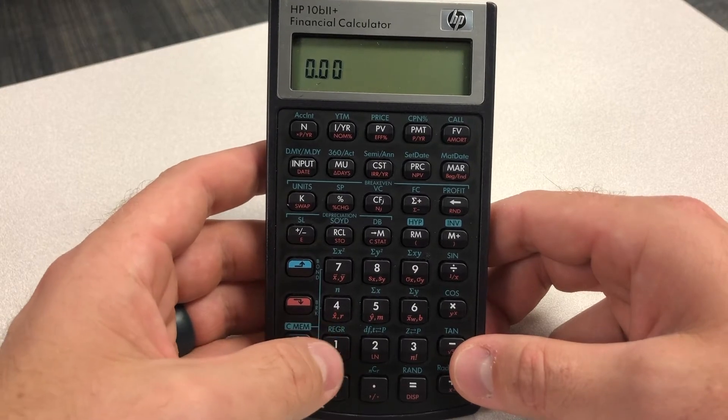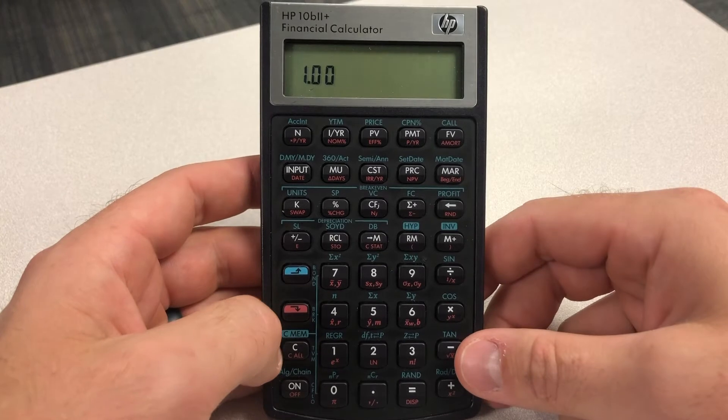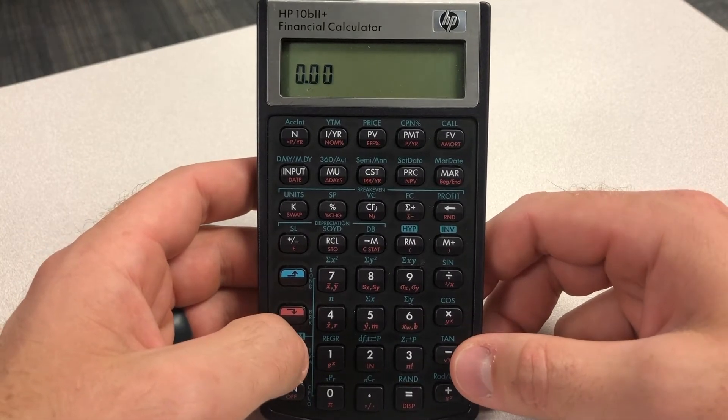Let's go back to one period per year. So one, shift, period per year. We're at one. We're going to hit shift, clear all. And we can see we're back at one.